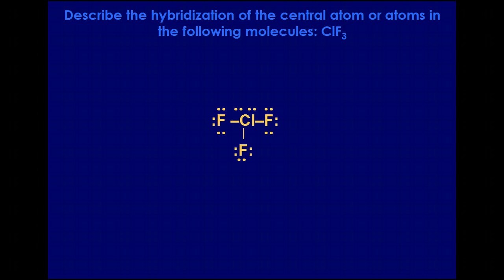For ClF3, if we draw this one out, we see that there are five pairs of electrons around chlorine. ClF3 has five pairs of electrons around the central atom, so we need five orbitals — that gives us dsp3.